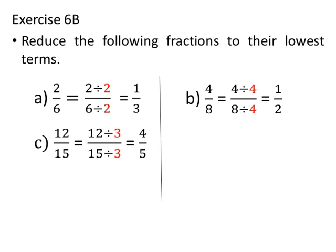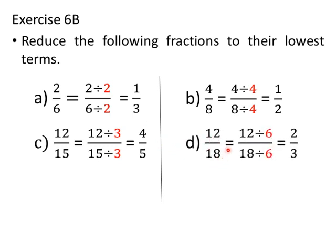Next: 12 by 18. The HCF of 12 and 18 is 6. So we divide both 12 and 18 by 6. Thus, 12 divided by 6 upon 18 divided by 6 equals 2 upon 3. Therefore, the lowest term of 12 by 18 is 2 by 3.